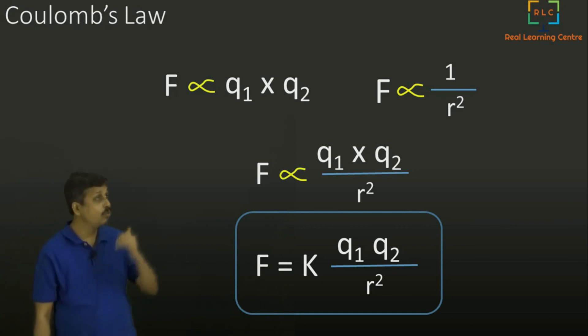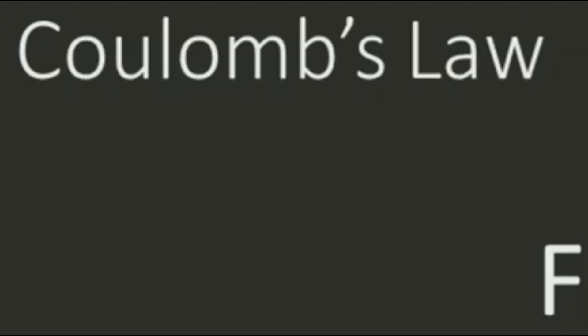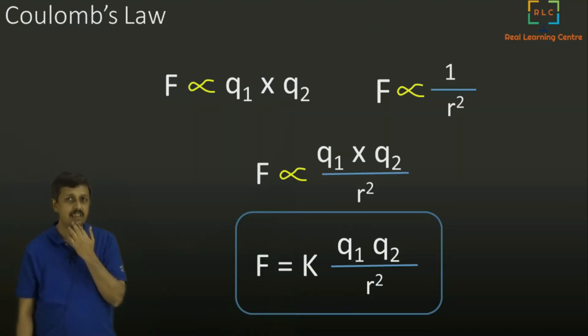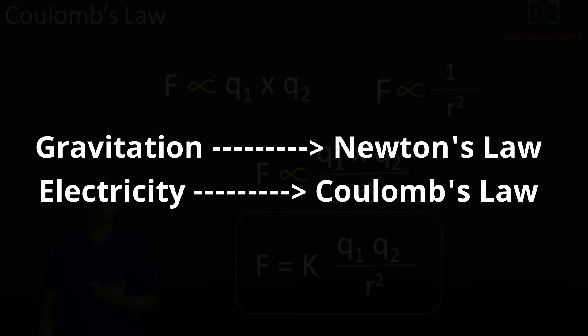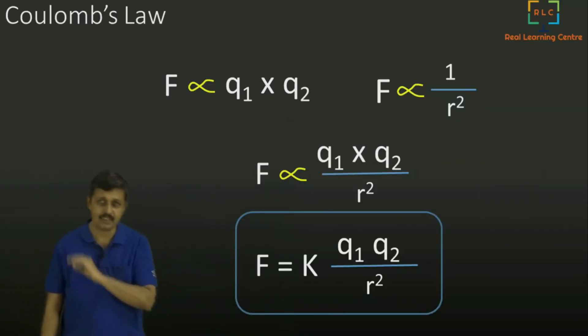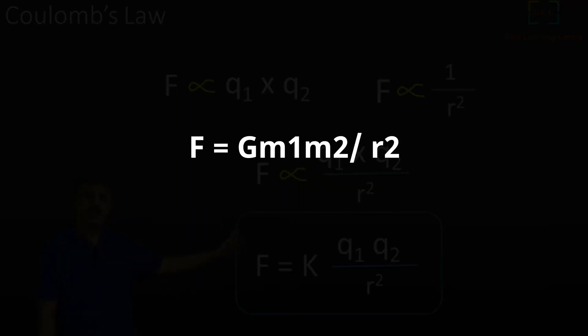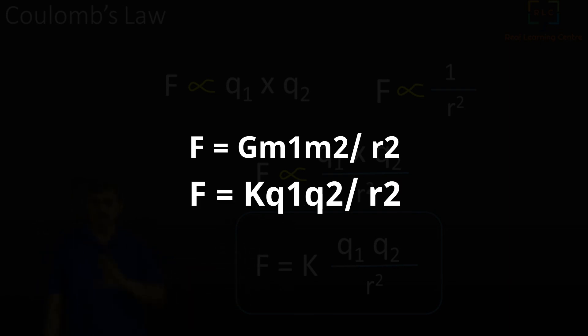This was discovered by Coulomb, so hence we call it Coulomb's law. Like the universal law of gravitation by Newton, it is so important to do everything else. In electricity, Coulomb's law is that much important. It is so similar. If you see in Newton's law we have F equals G into m1 m2 by r square. Here F equals k into Q1 Q2 by r square. It is almost similar.